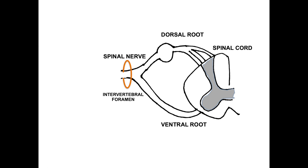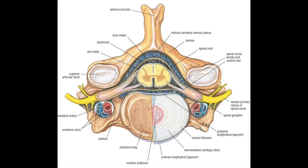The spinal nerve exits through the intervertebral foramen. In the cervical segment, the root exits cephalad to the corresponding cervical segment — the C5 root exits between C4 and C5 vertebra, and so on. Thus, C7 nerve exits between C6 and C7 vertebra, C8 nerve exits between C7 and T1 vertebra, and T1 nerve exits after the T1 vertebra.